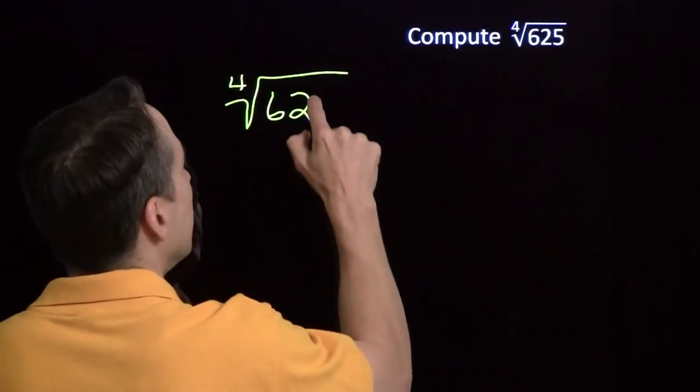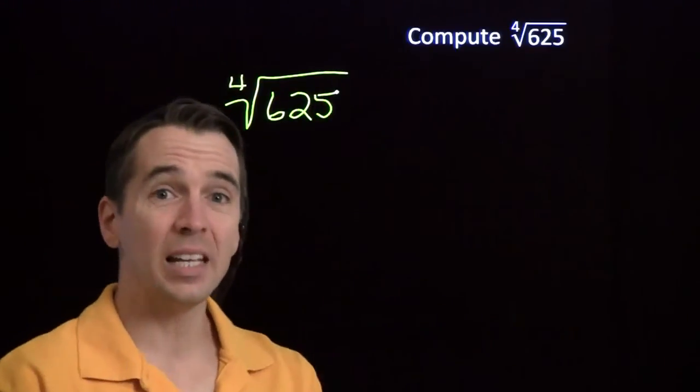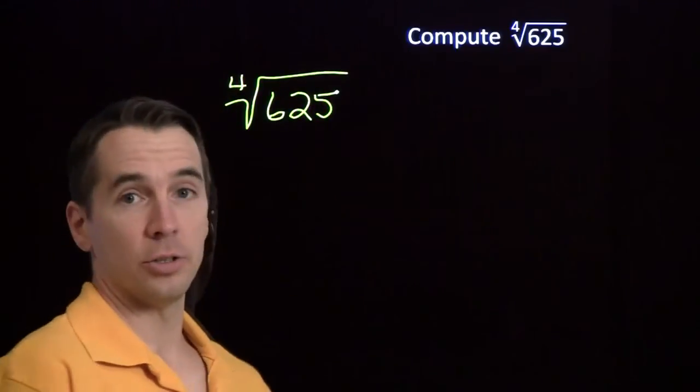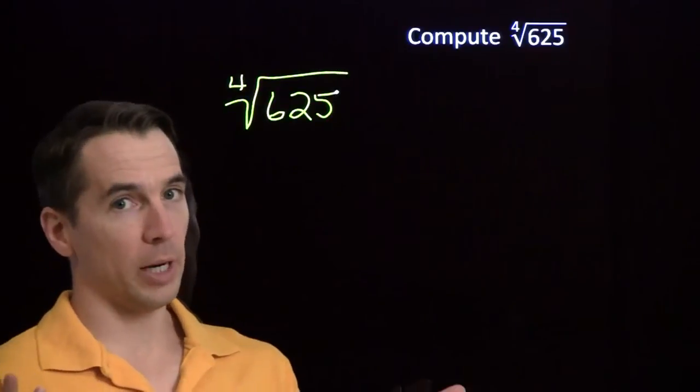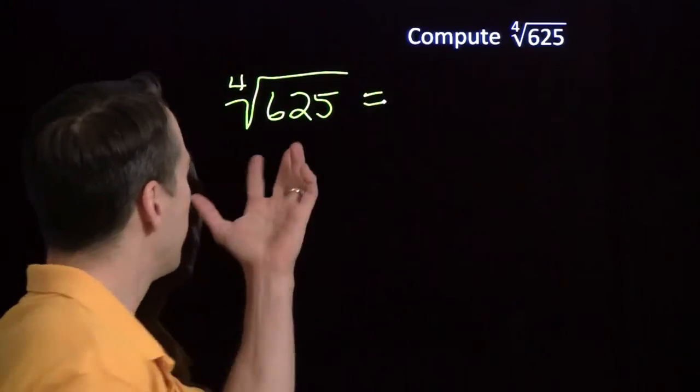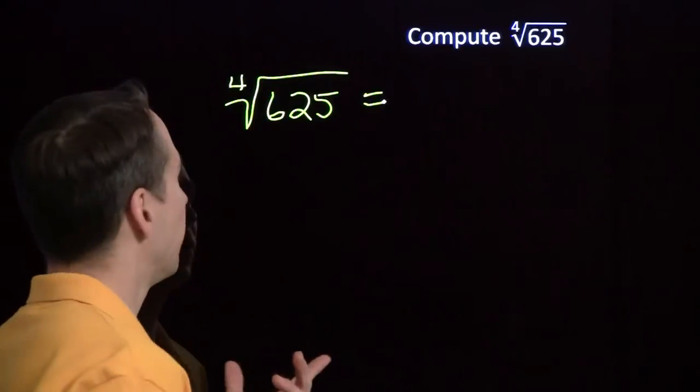Now that means we're looking for the non-negative number whose fourth power is 625. Maybe you know that right off the top of your head, but if you don't, we can start by factoring 625.